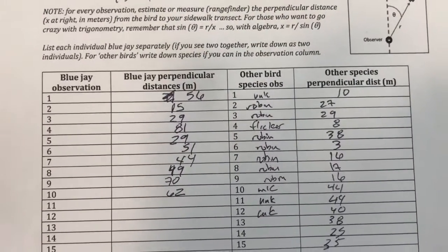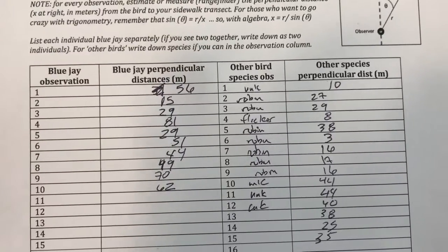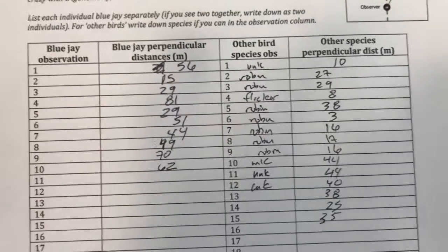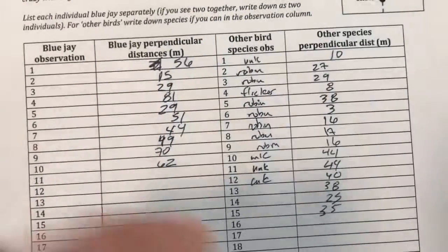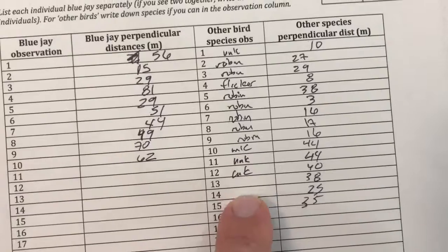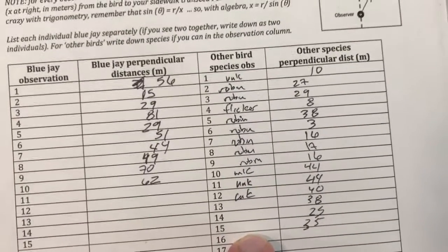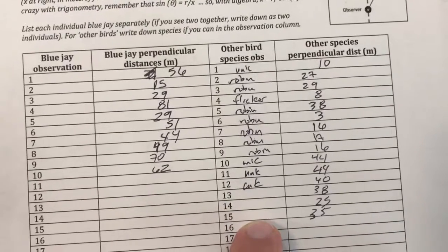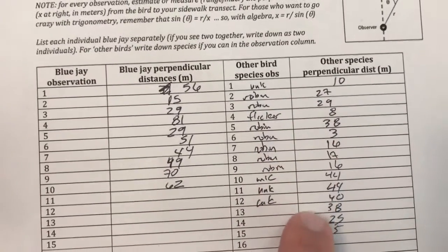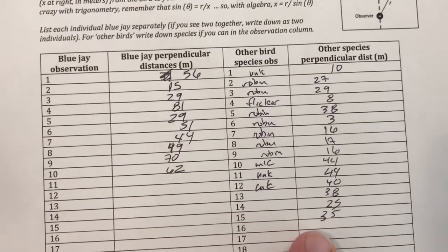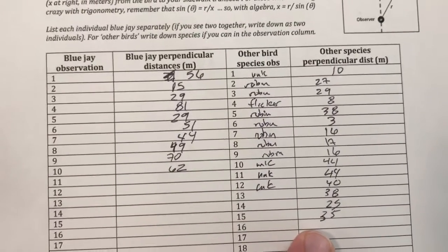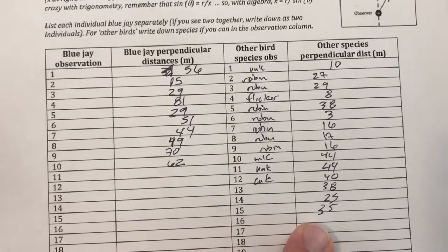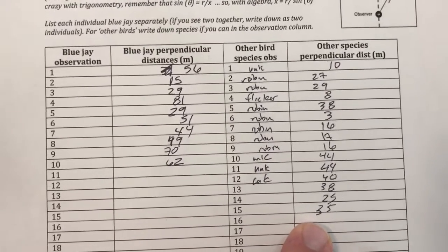I ended up with 10 Blue Jays — there are the distances for them. And I ended up with 15 other birds. I see I forgot to write Robin in the last three; I was so excited to finish. I'll fix that before I turn in my data sheet. You can see all the distances. I used the perpendicular distance estimation where I walked up perpendicular to where the bird had been and took the distance.